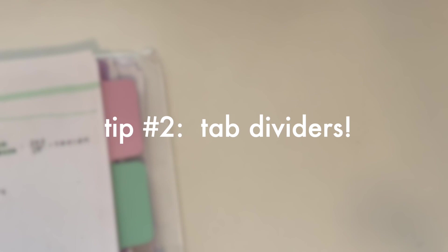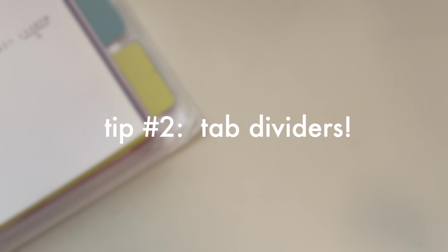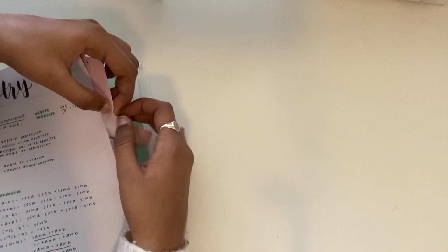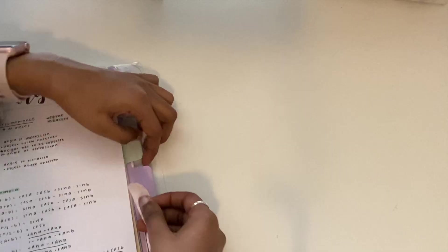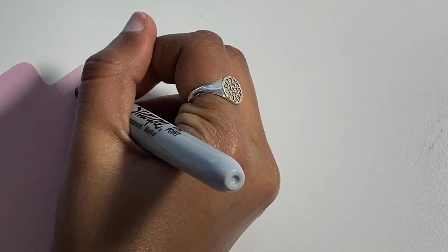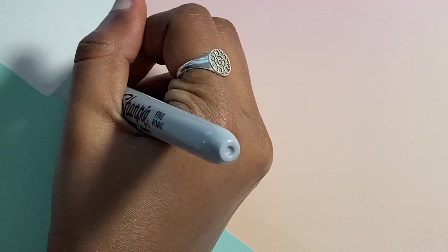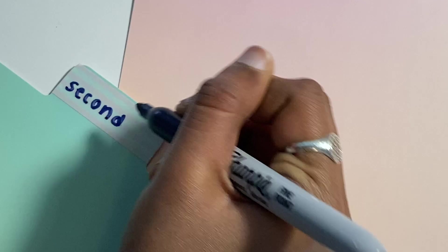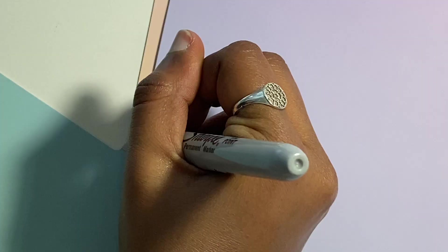My second tip is to use tab dividers — these are going to be the key to your organization. You can organize these however you'd like. Personally, I divide them based on each grading cycle. My school has five grading cycles, and each divider is devoted to one grading cycle where I store all my papers for that period. However, you could also organize by category: one divider for notes, another for exams, another for homework, and so on.